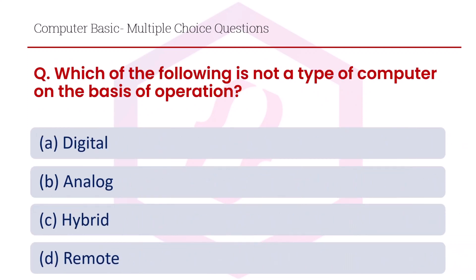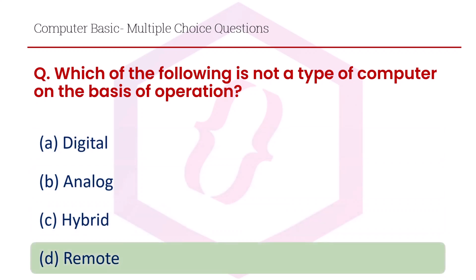Which of the following is not a type of computer on the basis of operation? Option A digital, option B analog, option C hybrid, option D remote. The right answer is option D, remote.